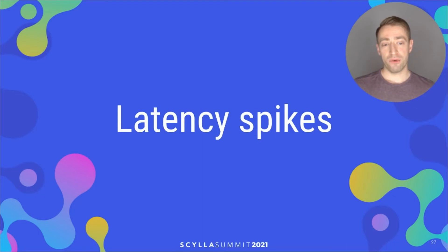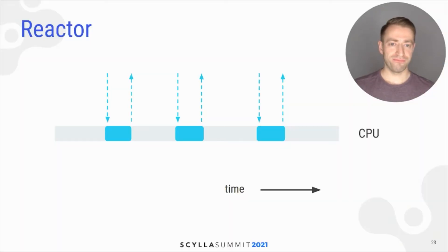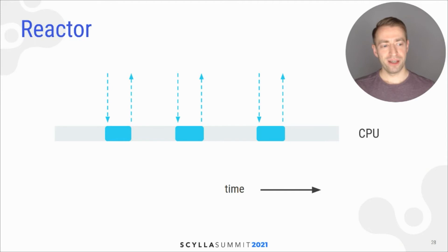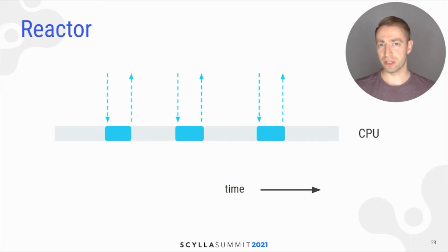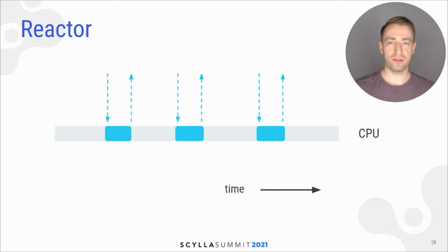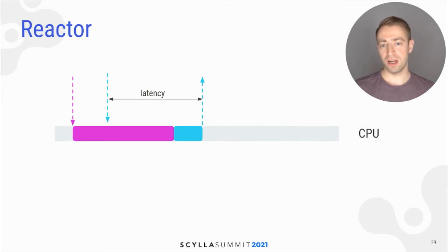Now about latency spikes. Here's the problem. When your CPU is mostly idle, your requests complete quickly. A request arrives, gets assigned a CPU, and you get the response.